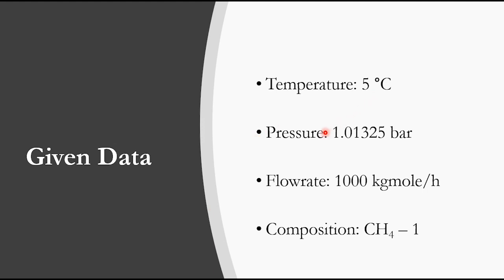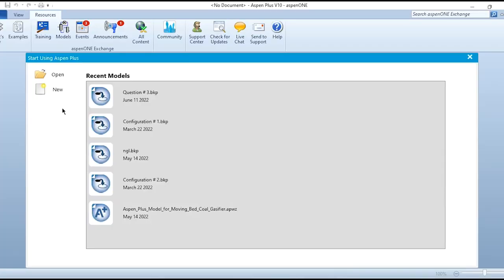The feed temperature is 5°C, pressure is 1.01325 bar, flow rate is 1000 kmol/hr, and the composition is pure methane with a mole fraction of 1. This stream needs to be compressed to 30 bar, and we will use the multi-stage compression module in Aspen Plus. Let's go to Aspen Plus and simulate the process.